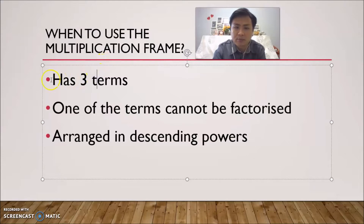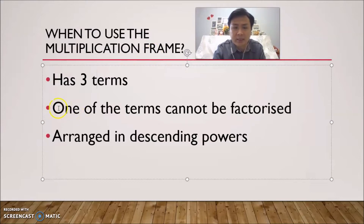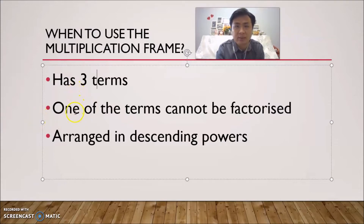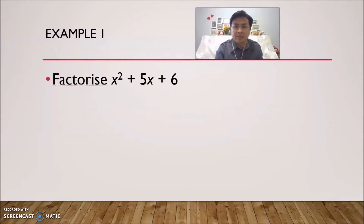First, your question must have only three terms. If it has more than three terms, you cannot use multiplication frames. Second, one of the terms cannot be factorized — we'll look at that later. Finally, it must be arranged in descending powers, because if it's not arranged in descending powers, we cannot apply the multiplication frame technique. These are the criteria you must satisfy before using factorization by multiplication frame. Let's take a look at the example.